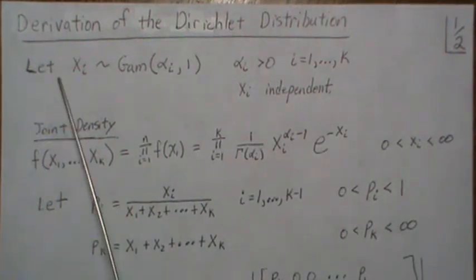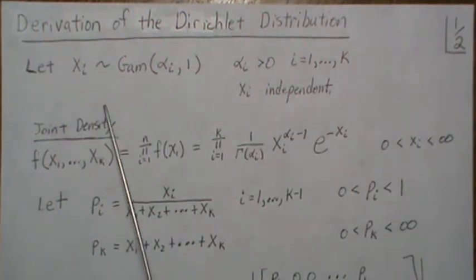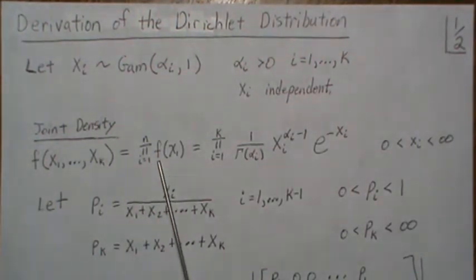Now the joint density for these X, since they're all independent gamma, is the product of each one of the densities for Xi and that is this.